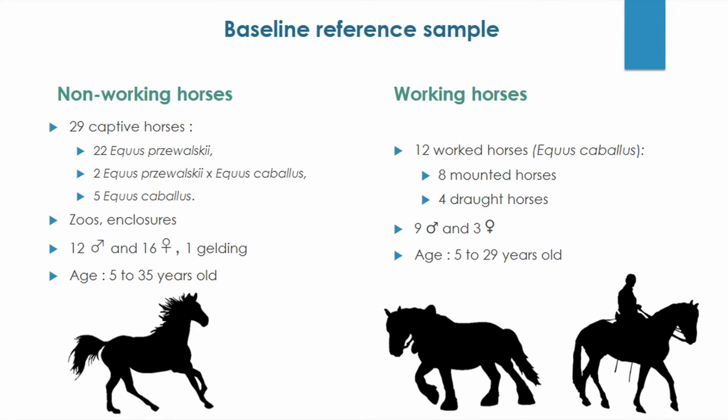Our sample is composed of 41 skeletons of documented modern horses. These animals were raised in various institutions such as museums and veterinary schools. There are 29 non-working horses: 12 males, 16 females, and one gelding living in an enclosure, like a zoo. They are between 5 and 35 years old. On the other side, we have 12 working horses: 8 used as riding horses and 4 as draught horses. This group is composed of 9 males and 3 females aged between 5 and 29 years old. Unfortunately, we don't have any pack equids.